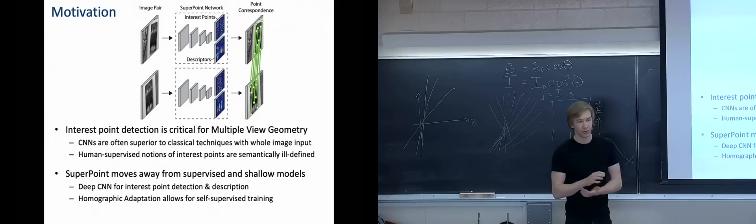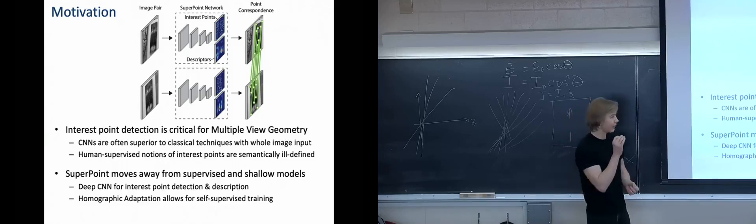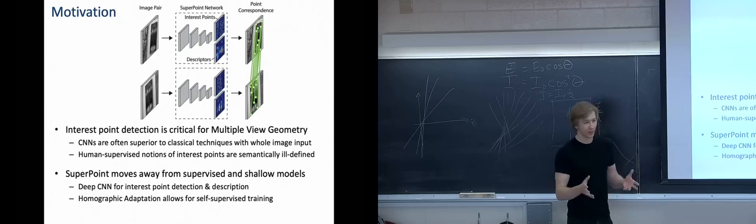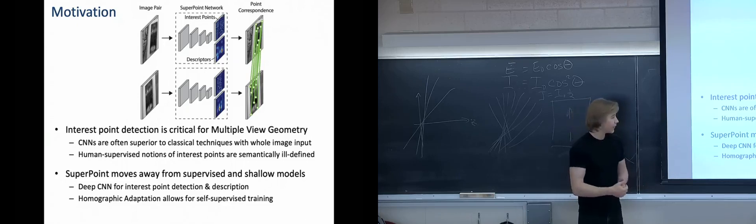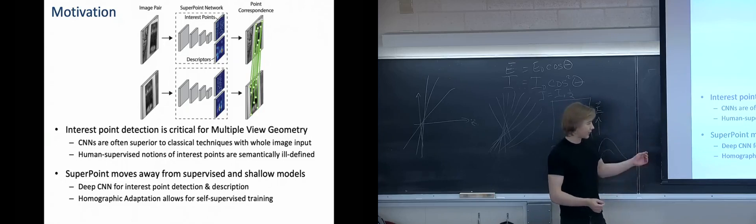However, if you try and do normal supervised learning for this task, the task of labeling your interest points can be a little bit ill-defined. So if you sit two humans down and ask them to label interest points between your two views of the same scene, they might label different spots and that's a problem for repeatability and just overall performance. So the SuperPoint model approaches this with a self-supervised approach by using homographic adaptation, and it also is a deeper model than previous works that used unsupervised approaches.